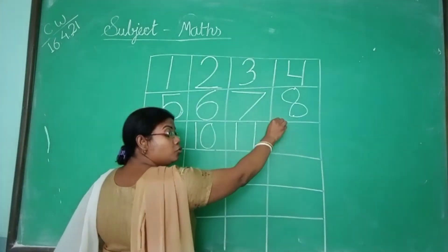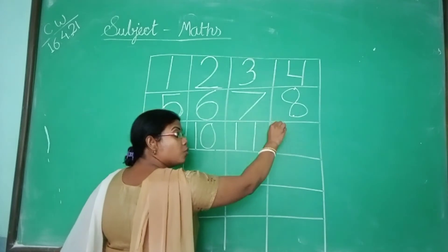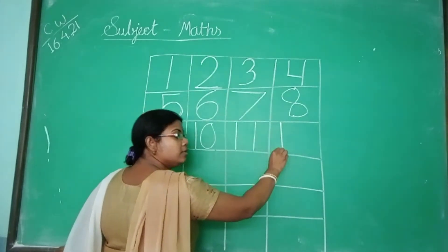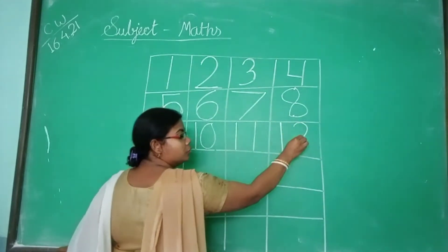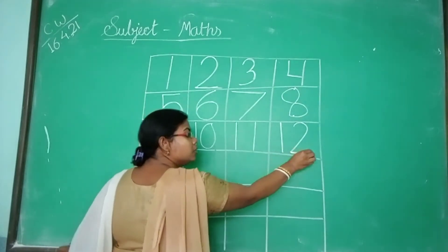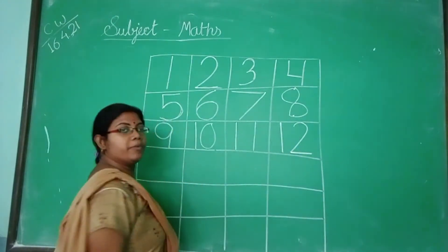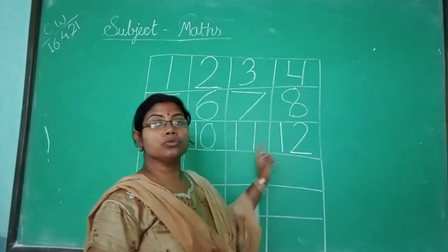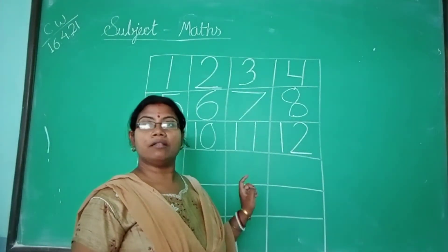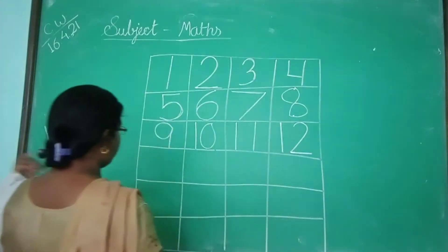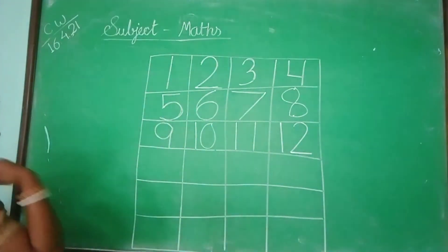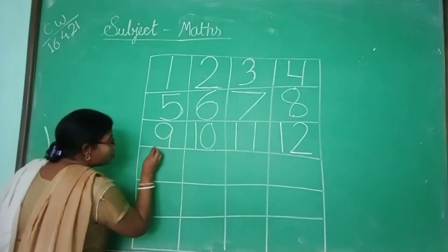For 12, write 1 then 2 — it becomes 12. For 13, write 1 then 3 — it becomes 13. Then 1, 4 becomes 14.